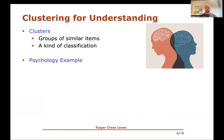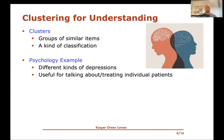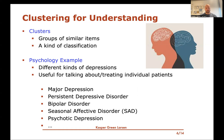Another place where clustering for understanding is useful is in psychology. People can suffer from depression, but there are many different types, and they may need different treatments depending on the kind of depression. Having a finer classification of different kinds of depression is useful both for treating patients — knowing which treatment works for one group but not another — and for communicating with other professionals. Depressions are divided into major depression, persistent depressive disorder, bipolar disorder, and so on.